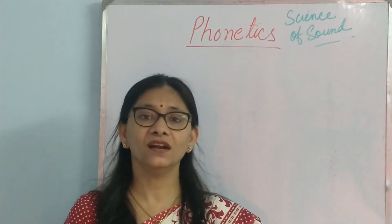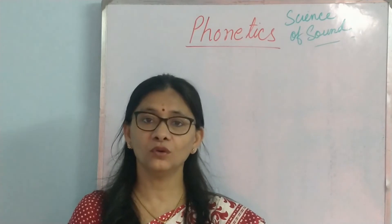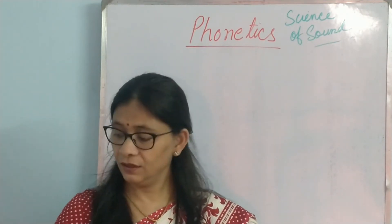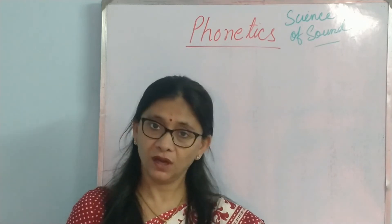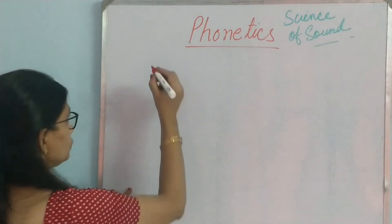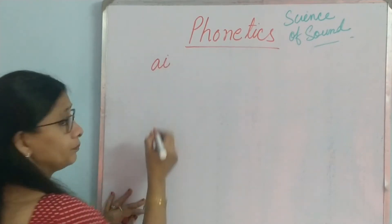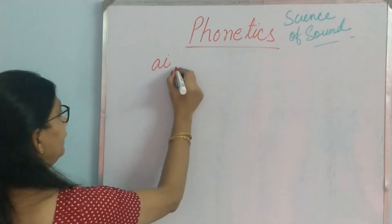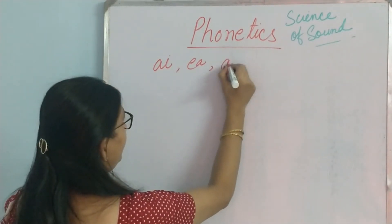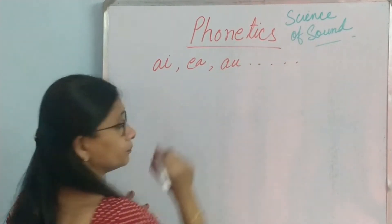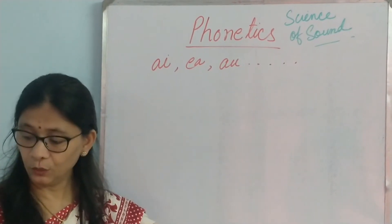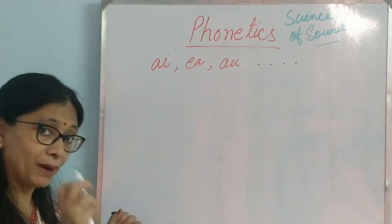In the last video we understood the sound of each and every vowel. Today let us take double vowels, combined vowels. Many words have two vowels together, like AI, EA, AU, and so on. Let us take them one by one and try to understand the sound of the combined vowels.